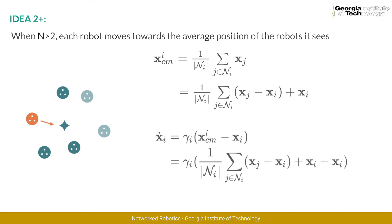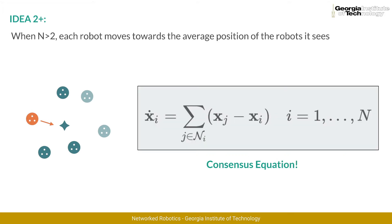Finally, by acknowledging that gamma sub i divided by the number of neighbors of robot i can simply be treated as a scaling factor only affecting the rate of convergence of the solution, we obtain a final expression for the dynamics of robot i. According to these dynamics, the velocity of each robot is equal to the sum of the relative positions of its neighbors with respect to itself. We call this very important equation the consensus equation.